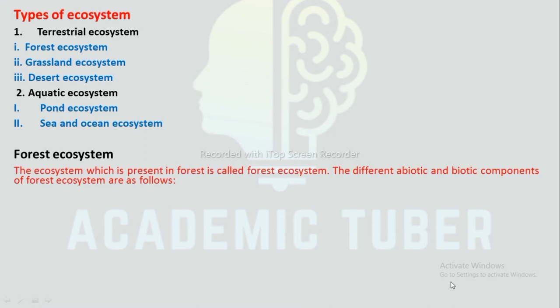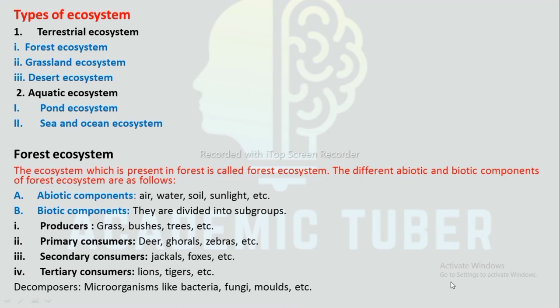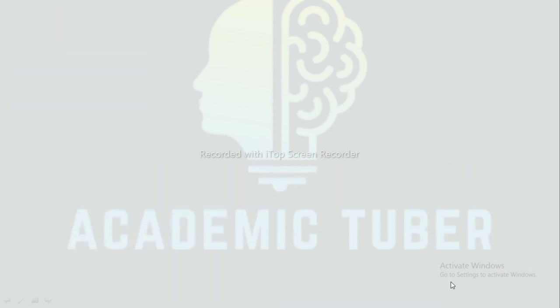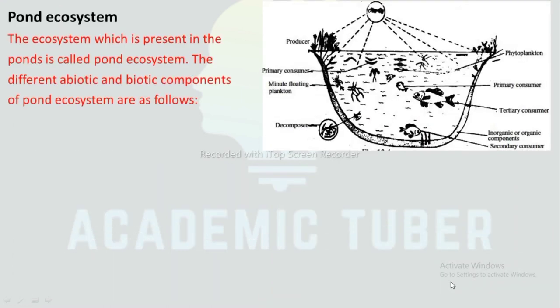Forest ecosystem: The ecosystem which is present in forests is called a forest ecosystem. Abiotic components include air, water, soil, sunlight, etc. Biotic components include producers such as grass, bushes, and trees; primary consumers such as deer, gorals, and zebras; secondary consumers such as jackals and foxes; tertiary consumers such as lions and tigers; and decomposers such as microorganisms like bacteria, fungi, and molds.